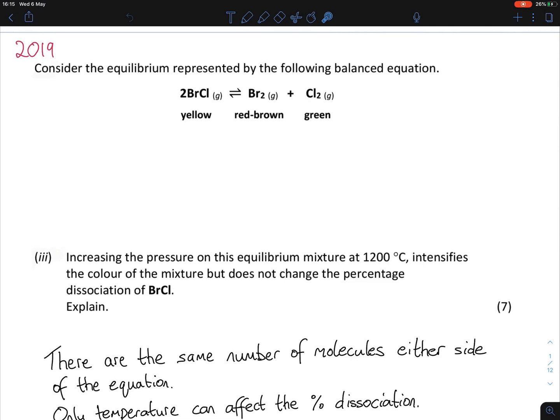2019: You're given an equilibrium and asked - increasing the pressure on this equilibrium mixture at 1200 degrees Celsius intensifies the color of the mixture but does not change the percentage dissociation of BrCl. Explain.